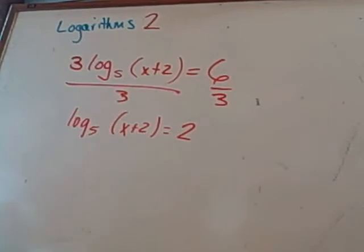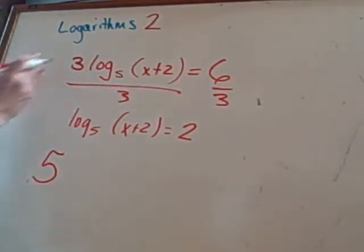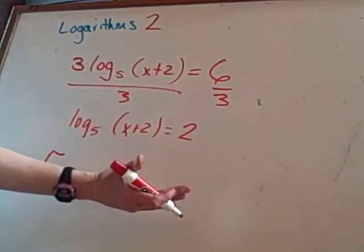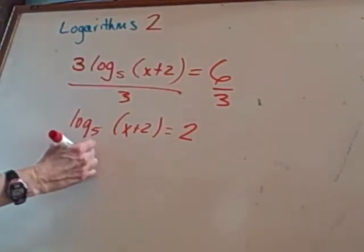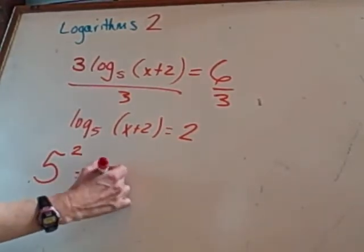If I lean to the left, what's the first thing I see? Five. That's going to be my base. If I lean to the right, what's the furthest thing I see? Two. That's going to go up here as your exponent. Equals the middle. What's the middle? X plus two.